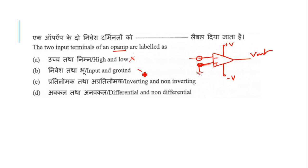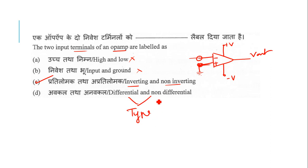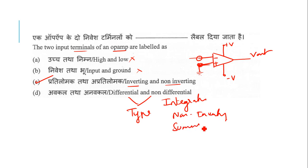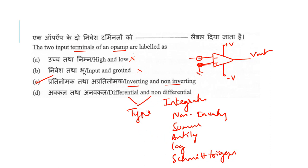The answer is inverting and non-inverting — that is the right answer. Differential and non-differential refer to types of op-amps. There is a differential op-amp, and non-differential types include integrator, summer, anti-log, logarithm amplifier, and Schmitt trigger. These are the various types of op-amps, and the right answer is inverting and non-inverting terminals.